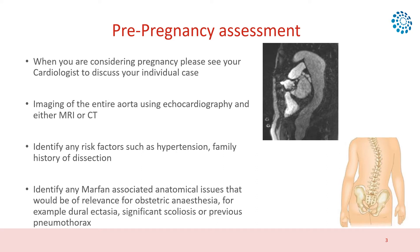This is usually performed using echocardiography to assess the aortic root and either MRI or CT to evaluate the rest of the aorta that cannot be easily seen using echocardiography. The assessment will also identify whether there are any other risk factors for an aortic event, such as high blood pressure, whether there has been any progressive dilatation of parts of the aorta, and whether there is a family history of aortic dissection or rupture.